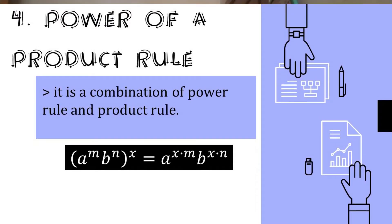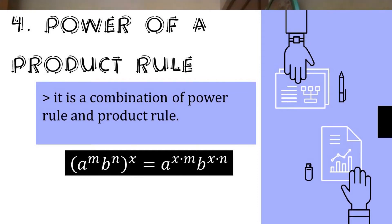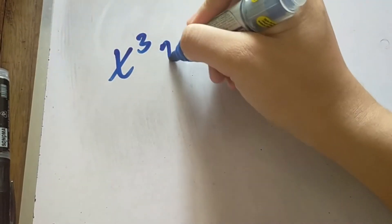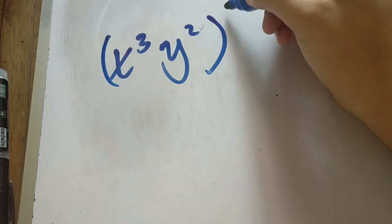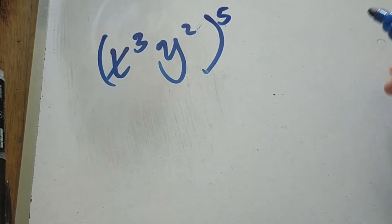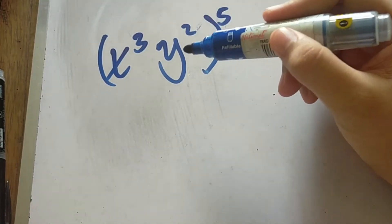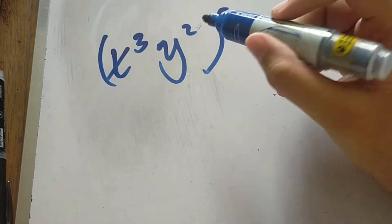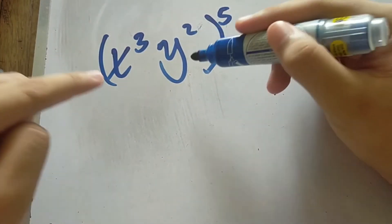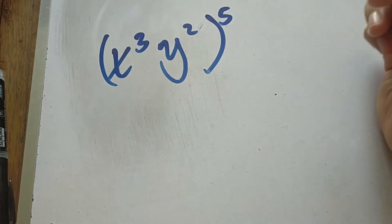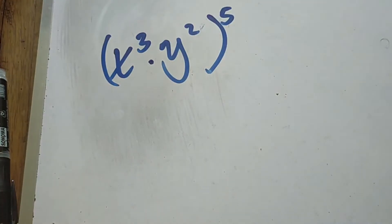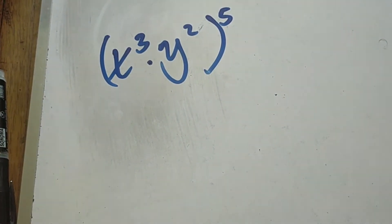Let me show you an example on how to simplify using the Power of a Product Rule. For example, we have x raised to 3 times y raised to 2, and they are all raised to 5. In this case, the operation between x and y is multiplication — that's why it's called Power of a Product. The product of these two variables is raised to another exponent. Note: if the operation is addition, this rule cannot be applied.